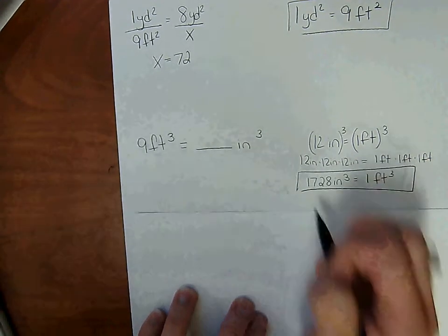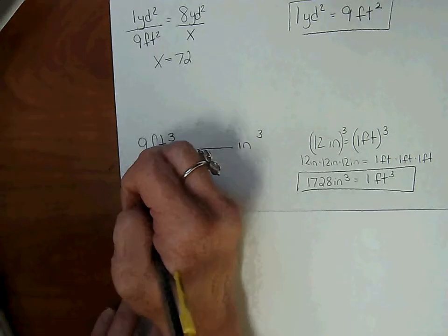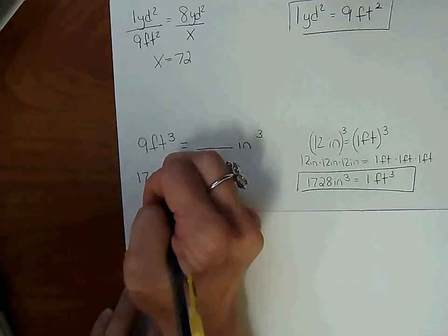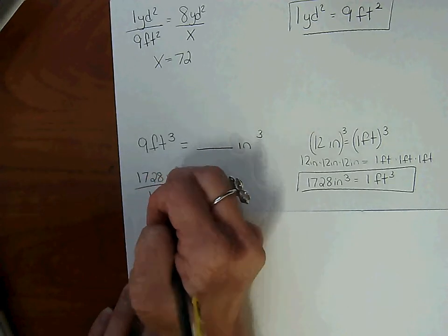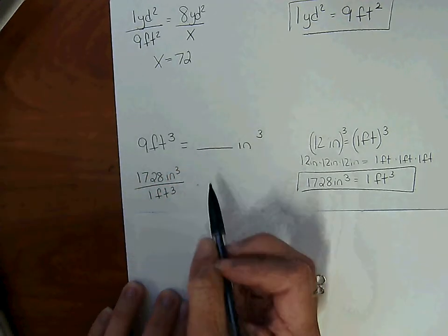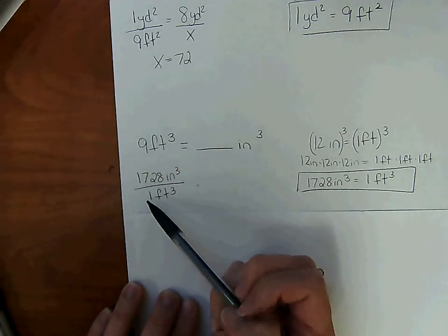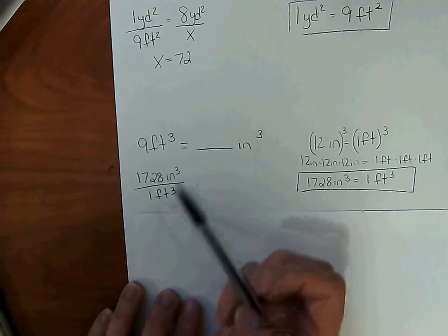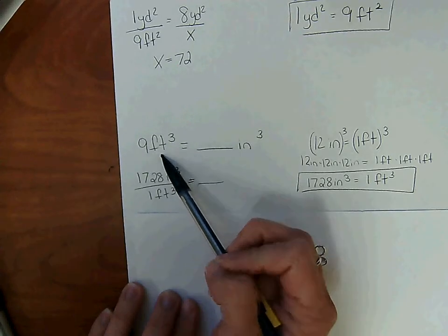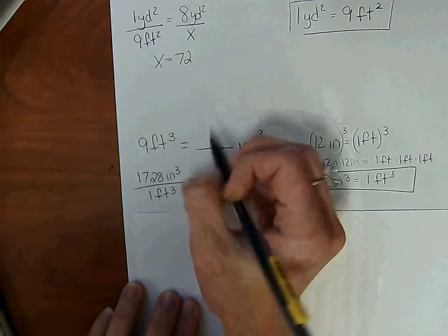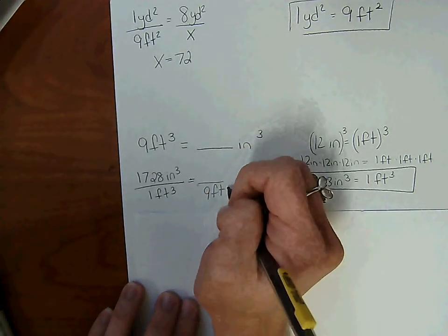So we're going to set up a proportion. 1,728 inches cubed equals 1 foot cubed. Not equals, I'm sorry. 1,728 inches cubed over 1 foot cubed equals... So we have 9 feet cubed. We're going to line up the units. So 9 feet cubed is going to go in the denominator, X in the numerator.